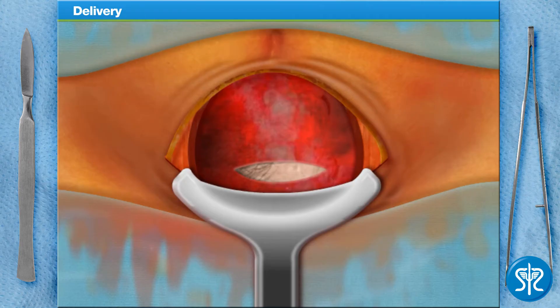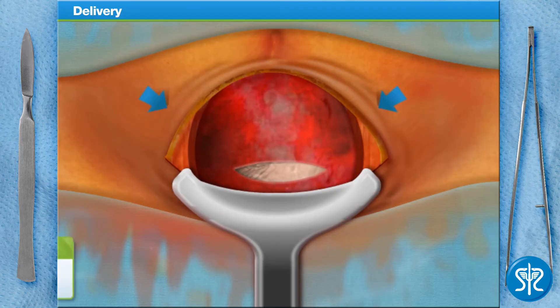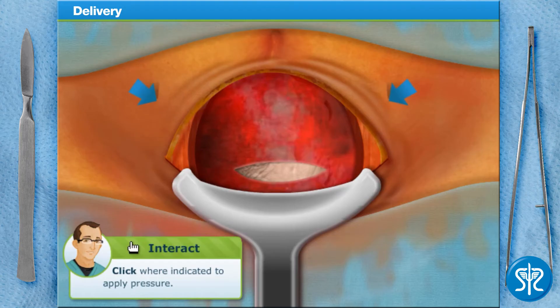We're almost there. Sometimes a surgeon will need to use forceps to help the baby out, but not in this case. The next step is to apply pressure around the baby's head to assist us in removing the baby from the uterus.